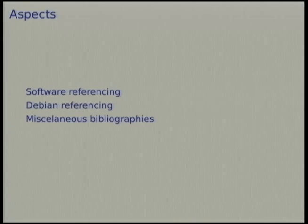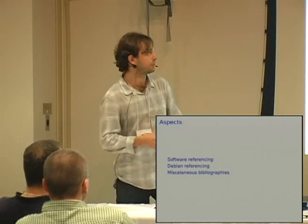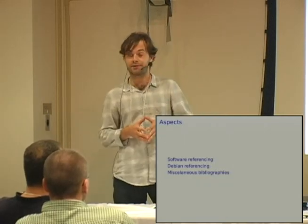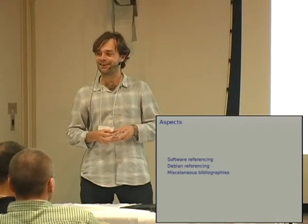On our behalf, I want to expose you to a proposal for the solution to the problem of citations infrastructure in Debian. There are three aspects of citations: first, software referencing - how do we reference software and the papers associated with it which describe the methods implemented, which is what usually happens with scientific software.